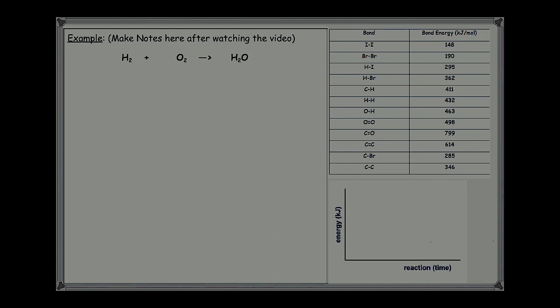In this example, hydrogen reacts with oxygen and water is formed. This equation is not currently balanced. In order for us to calculate the energy change accurately we have to use a balanced equation.